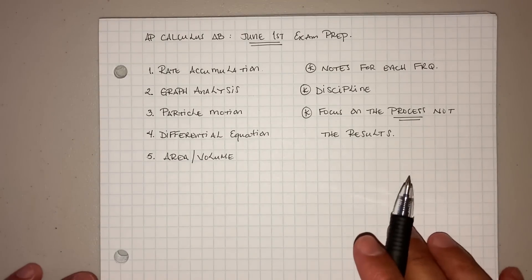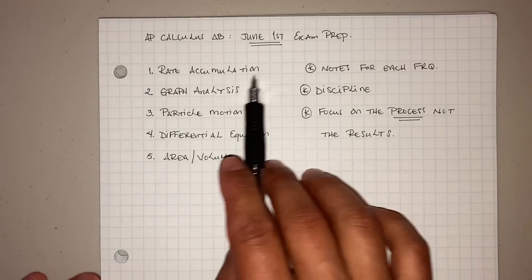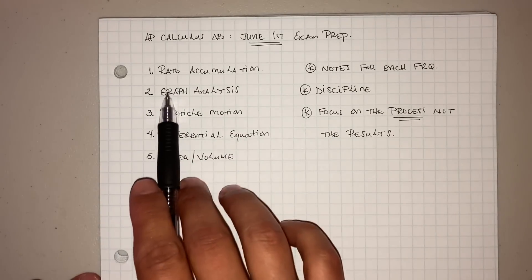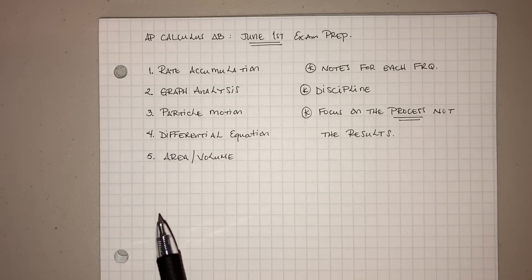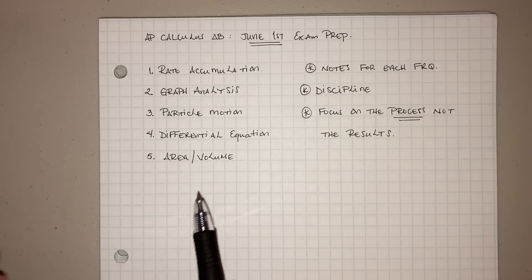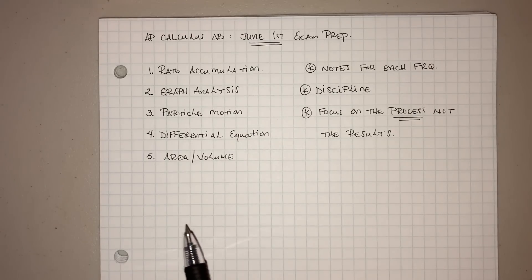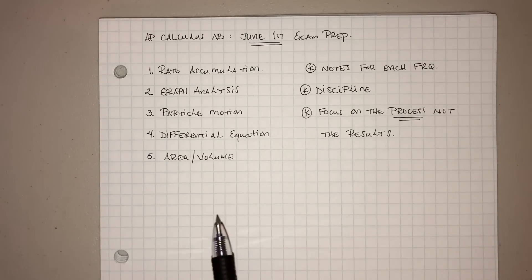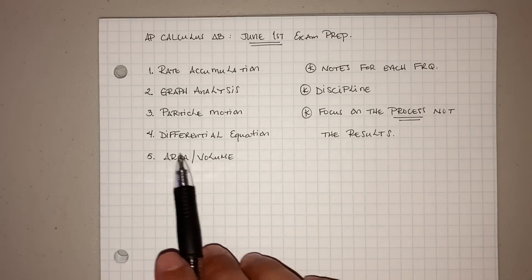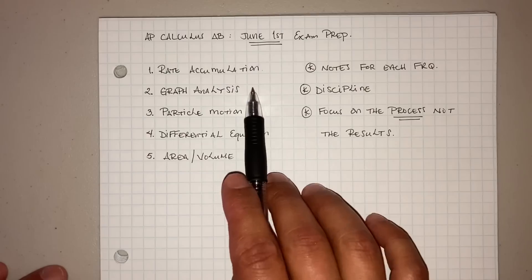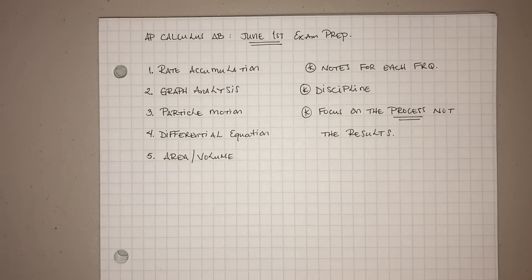The focus is for me to be able to recognize, if it's a rate accumulation, boom, I got to go ahead and see what am I going to look for. Graph analysis, study all those FRQs. What are they asking for? They ask the same thing. Particle motion, same type of thing. Some questions are just fundamental. So I encourage you, go back, study these, and that way you can get an idea of what to look for, what to see.